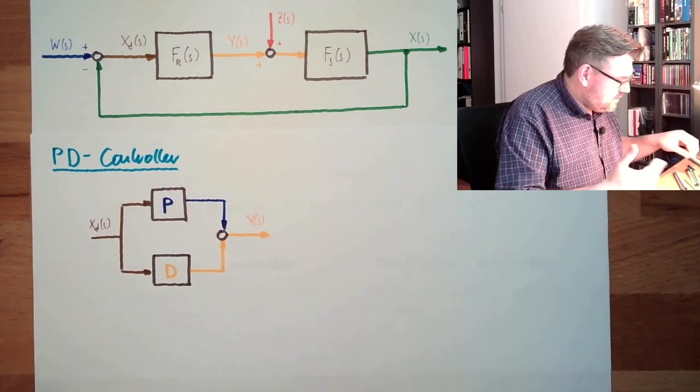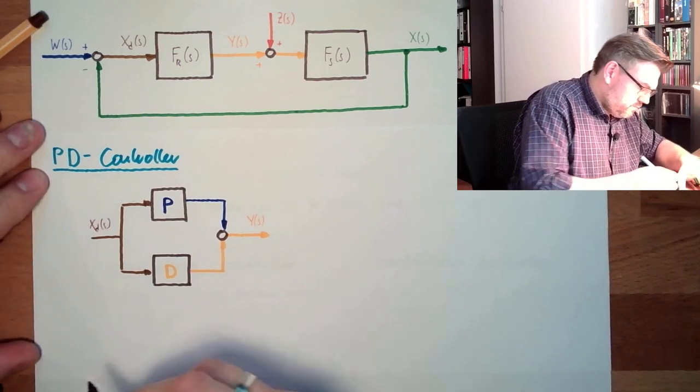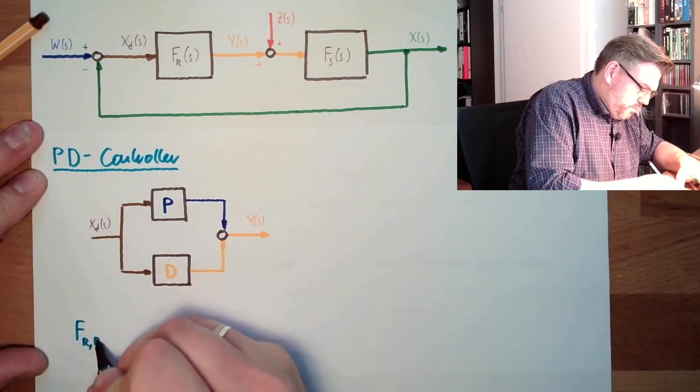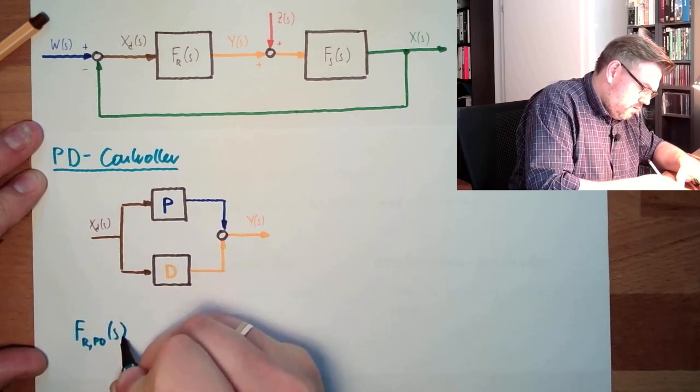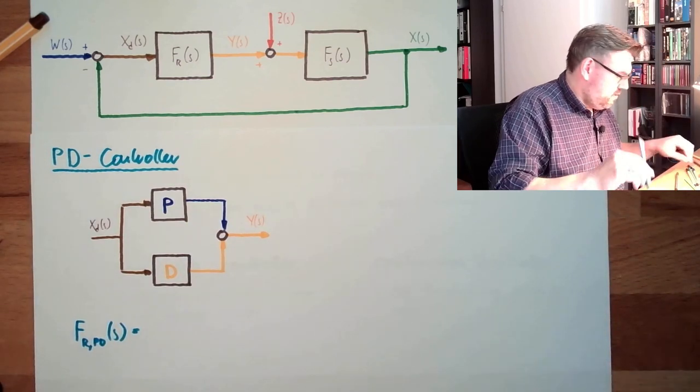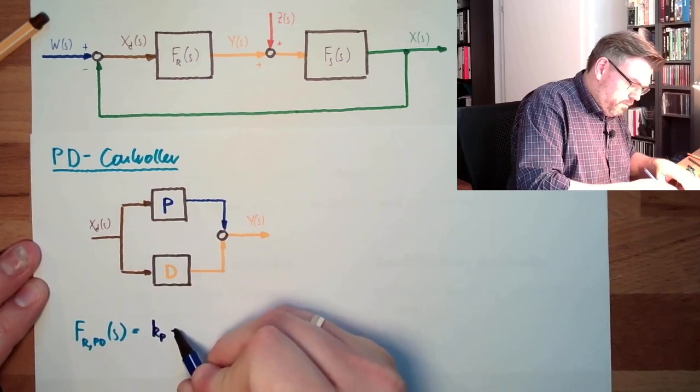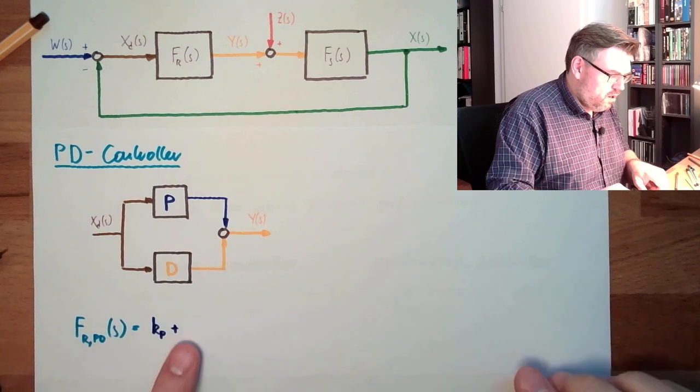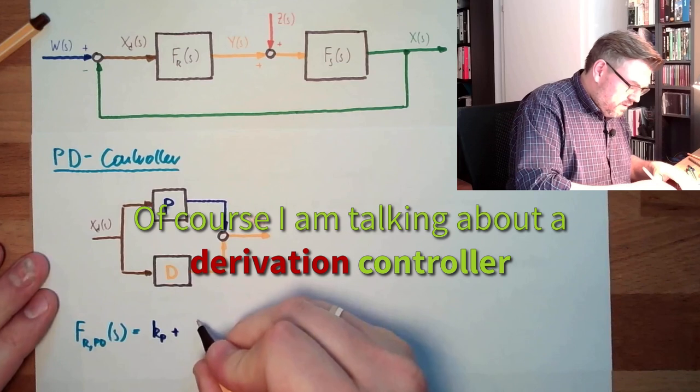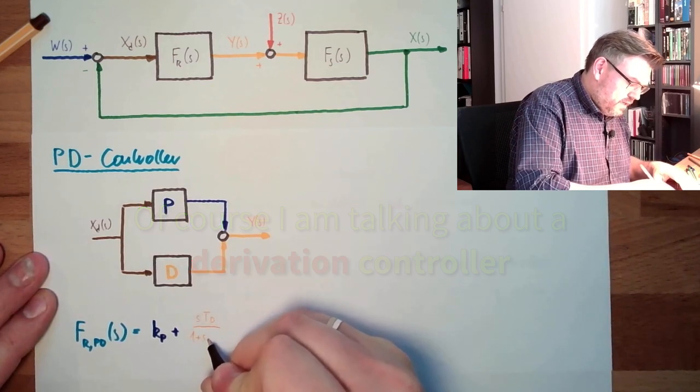So what is the total transfer function? F-regulator PD. This is actually the transfer function of the proportional controller, which is KP, plus the transfer function of the differential controller, which is STD divided by one plus ST1.